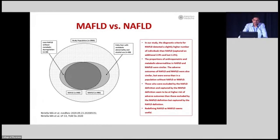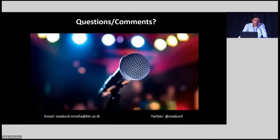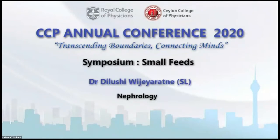The proportion of anthropometric and metabolic abnormalities at baseline and outcomes after seven years were very similar between MAFLD and NAFLD groups. The only difference was that those excluded by NAFLD but included by MAFLD had worse outcomes, suggesting redefining NAFLD as MAFLD has some but limited added value. There is ongoing debate, and the MAFLD definition will probably not come into prime time yet — more large international studies are awaited. We were among the first to publish this. You are free to contact me by email or Twitter for questions.